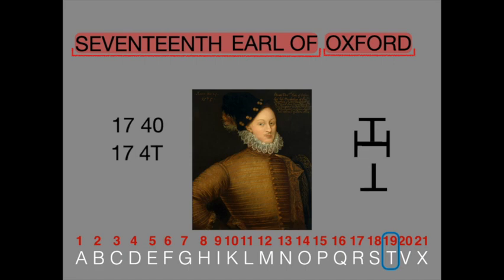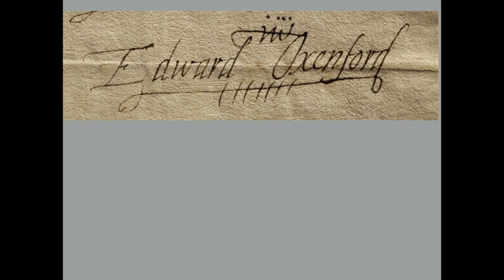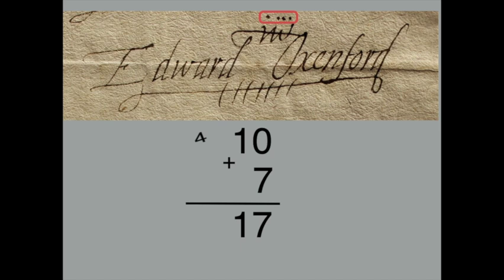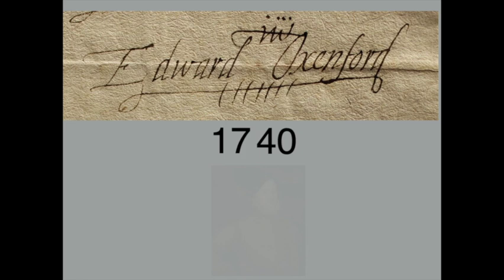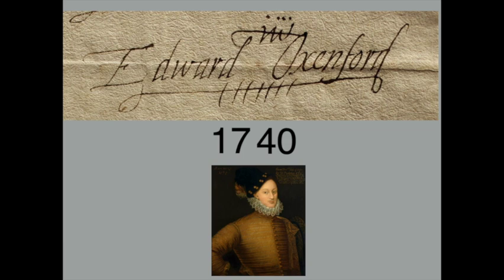This was very important to him. I showed on that video this signature and how he conceals — or ciphers — within it 1740: with a big 10 in the centre, plus 7, which is 17, and then four multiplied by 10, which is 40. So there's your 1740. A number of people wrote in the comments and said, 'Well, hang on — if he's called Oxford, which you're saying is 1740, the letter T, why on earth is he signing himself Oxenford? Doesn't this rather blow your argument apart?'